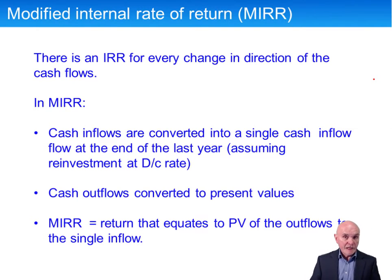The technique used in P5 to deal with this is to use what's called the modified internal rate of return. Now there are formulas around this. If you're doing P4, you may have come across a formula, but I think there's an easier way to do it.